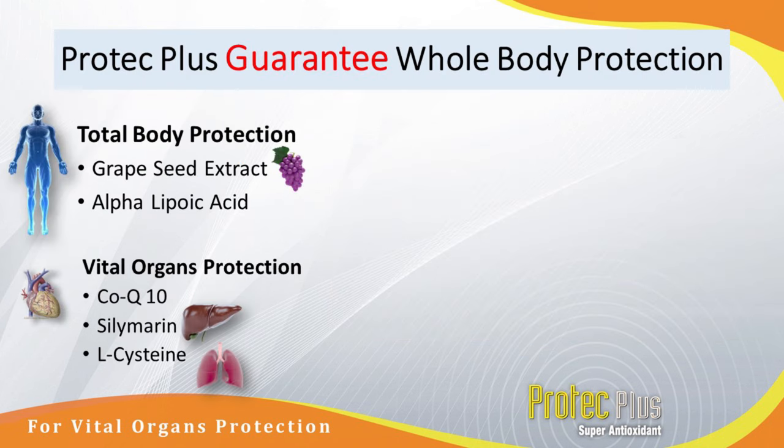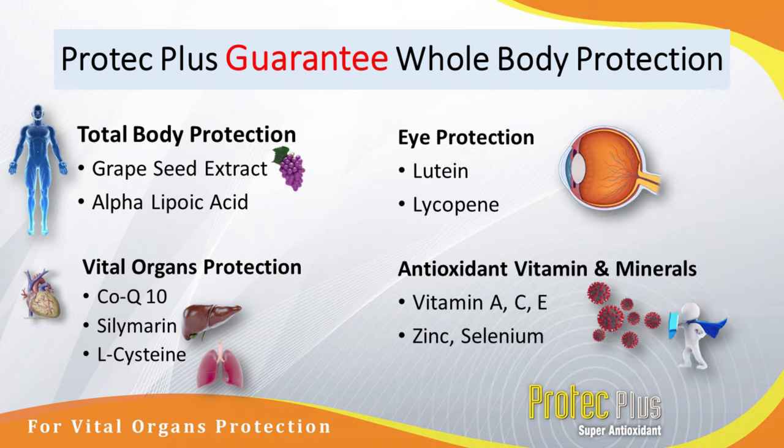The blood pressure is GSC, ELE, vital organ protection, co-chute, selimary, L-cysteine, and protein, lutein, lycopene, and the OCD is immune to the immune system. The vitamin and OCD is immune to the immune system.